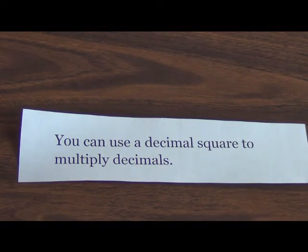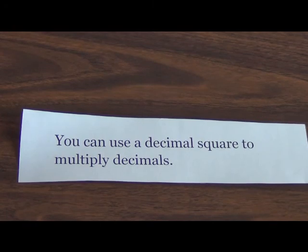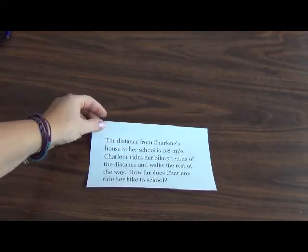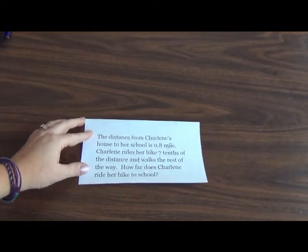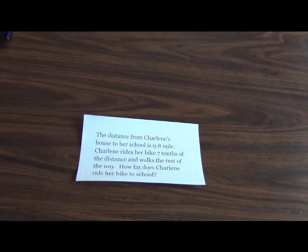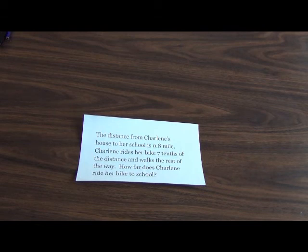Hey everyone, I'm here today to give a little bit of a lesson about how you can use decimal squares to multiply decimals. We're going to start with a problem that I've already written up. Let's read it: The distance from Charlene's house to her school is 8/10 mile. Charlene rides her bike 7/10 of the distance and walks the rest of the way. How far does Charlene ride her bike to school?